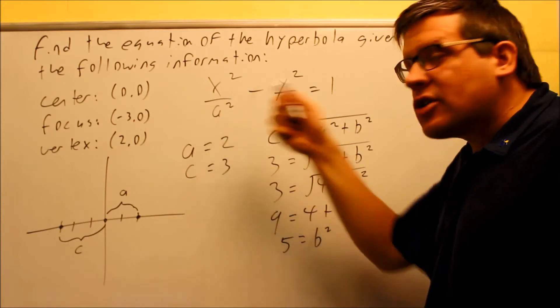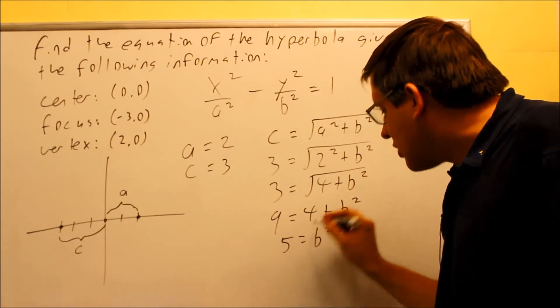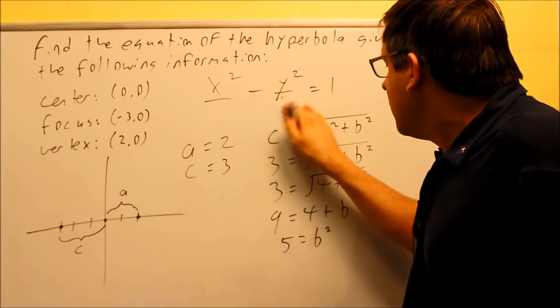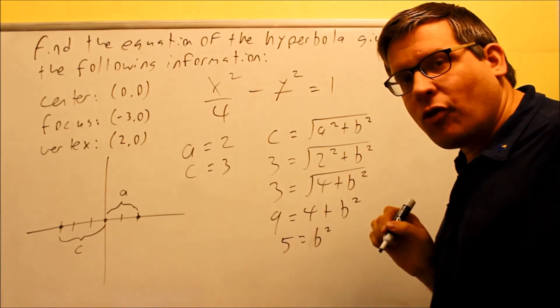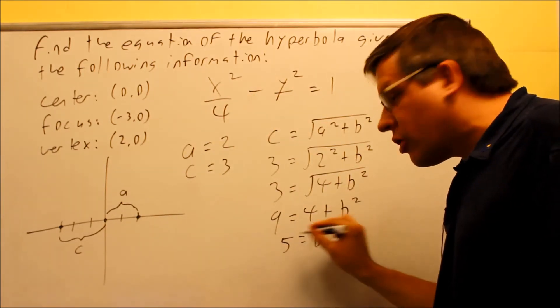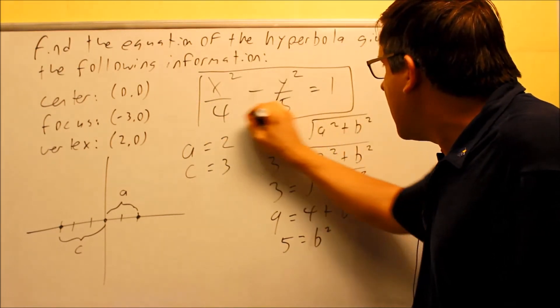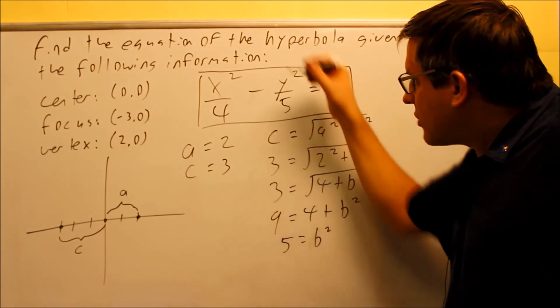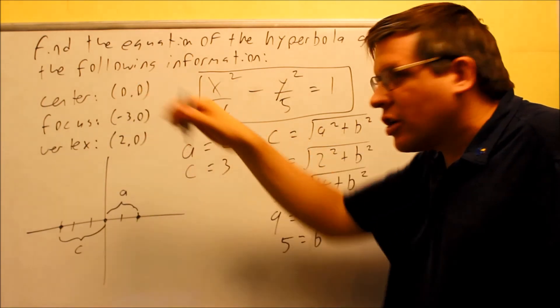So now I know what A squared should be. A squared is 2 times 2 is 4, and B squared is going to be 5. So now what I'll do is I'll just take my formula right here and just replace it with what I just found. 2 squared is going to be 4, and B squared is 5. I can go ahead and put 5 in there. So this right here inside the box, that right there is going to be the answer for this whole problem. That's the hyperbola that would have these particular characteristics.